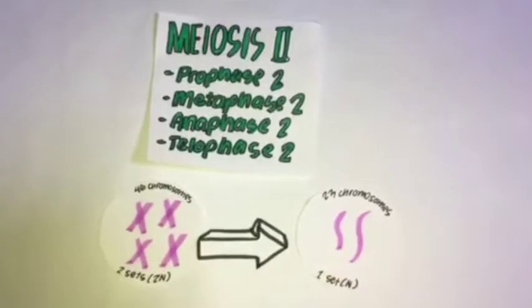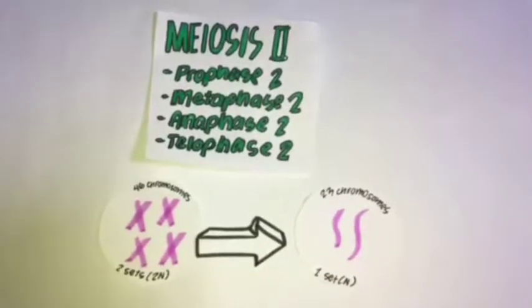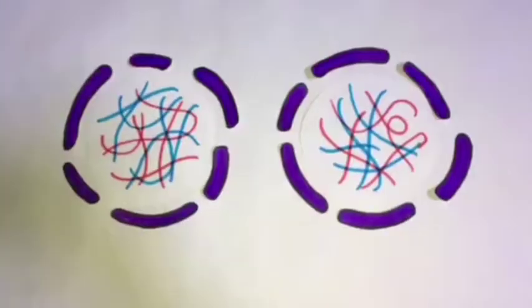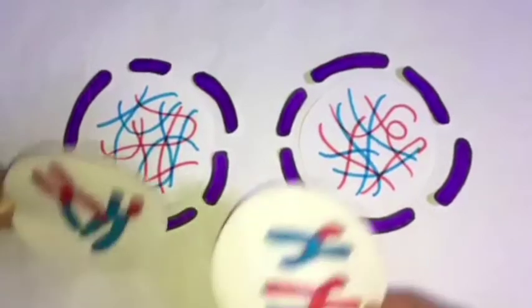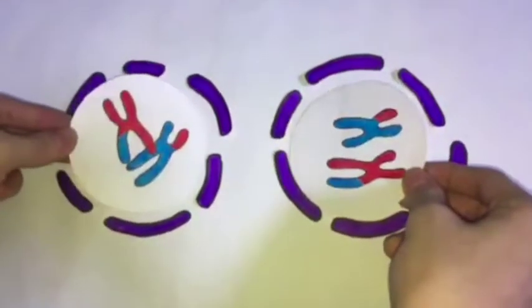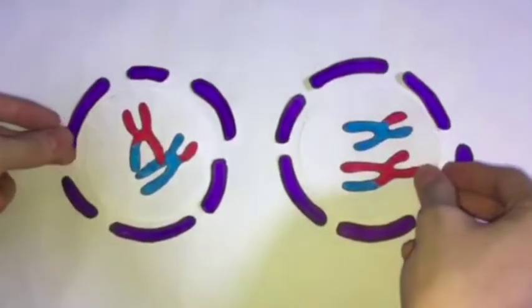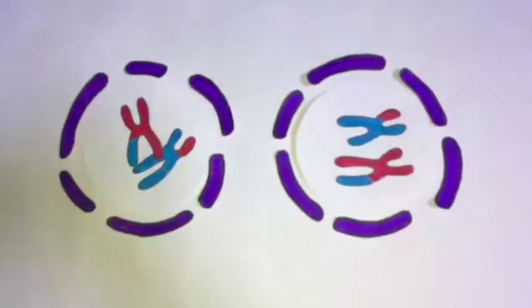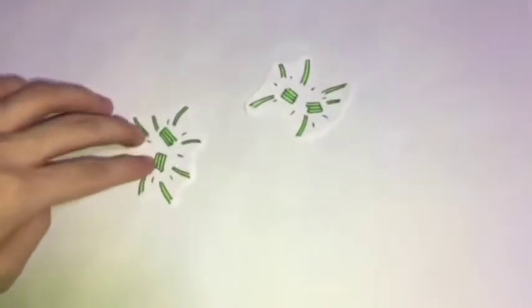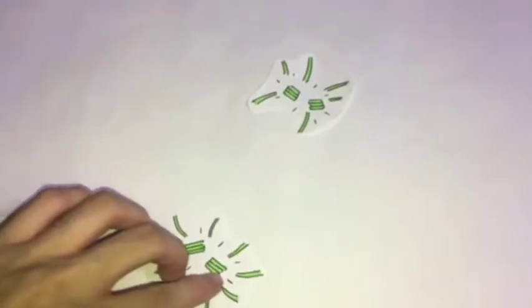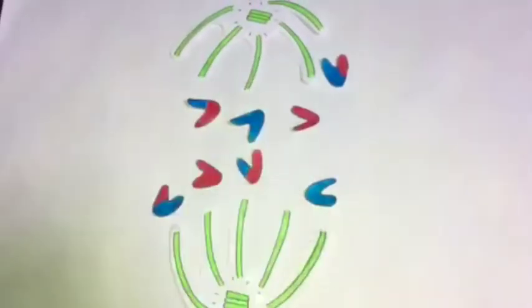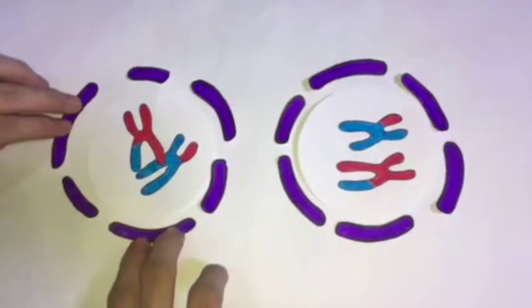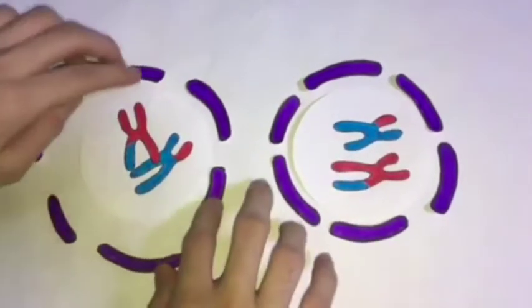It is just undergoing a second division. Prophase 2 is the first stage of meiosis 2. Unlike the end of phase 1 where chromosomes are decondensed, in prophase 2 they condense again. Centrosomes move away from each other, spindle fibers begin to form, and nuclear envelopes break apart in order to expose the chromosomes.